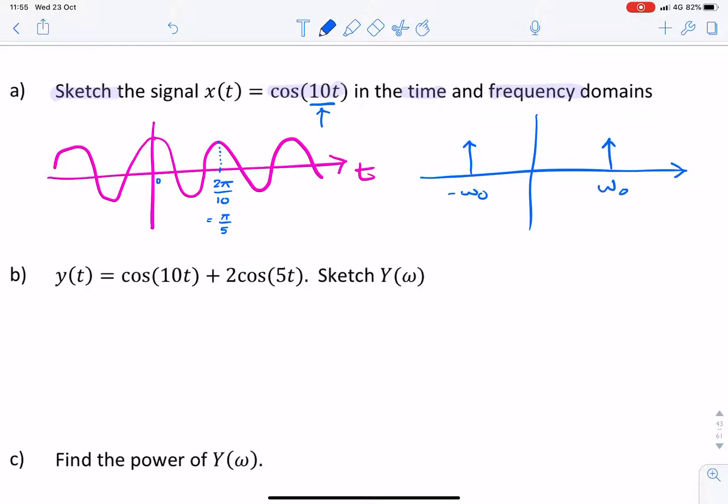So, minus ω₀ and π, π. But in this case, we know the value of ω₀ because it's given. So, we can simply replace that with 10 and minus 10.